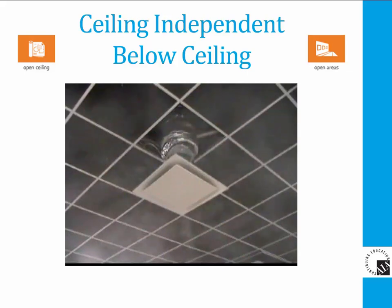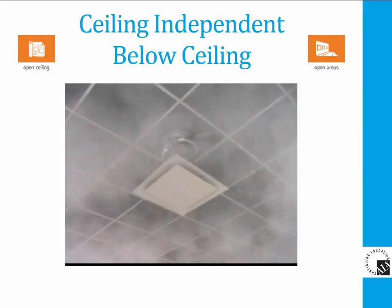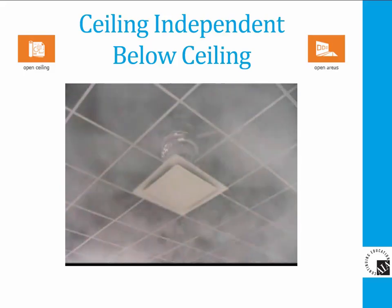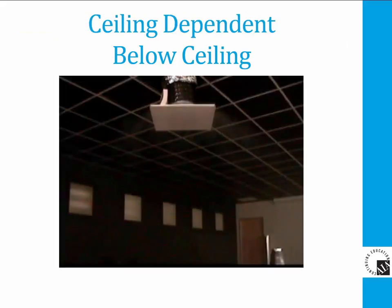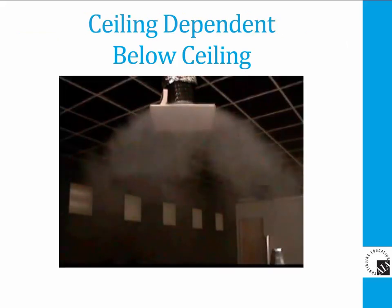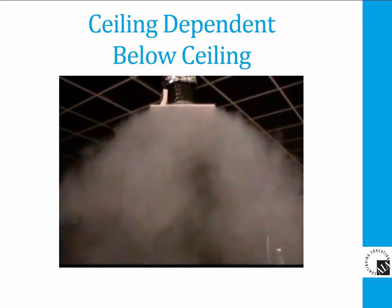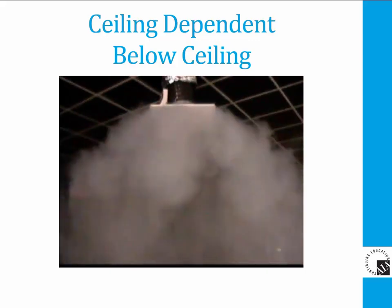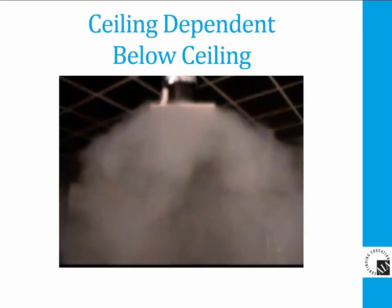This smoke video shows that when an outlet is designed for an open ceiling, the air jet will be discharged horizontally without an adjacent ceiling surface being present. This smoke video also illustrates how discharged air from an outlet not designed for an open ceiling can result in potential discomfort to occupants.